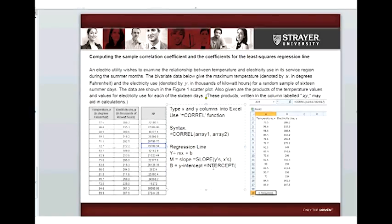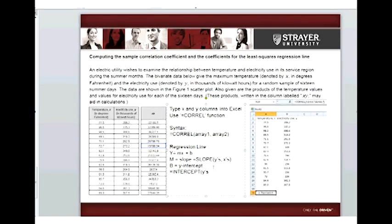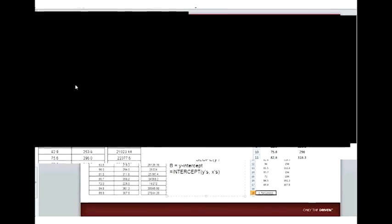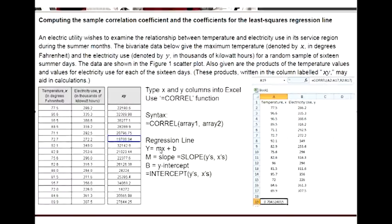and the same, Y's comma X's. And that gives the coefficients, Y equals MX plus B, so the slope gives the M and the intercept gives the B that we can then plug in for the equation.